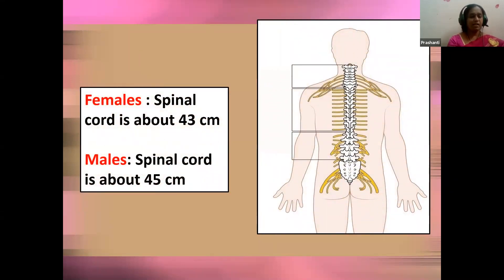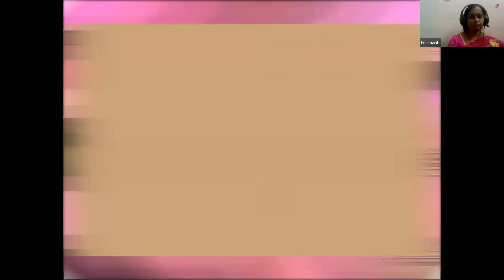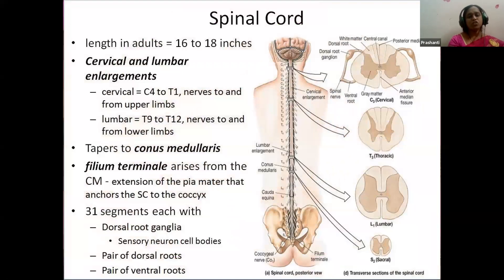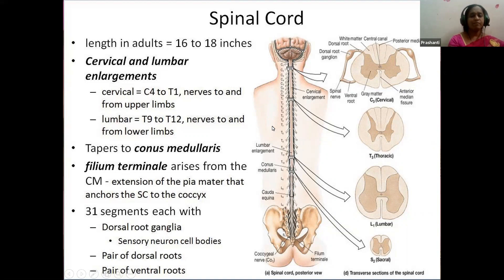The female spine is different from the male spine — not of equal size. The female spine is 43 centimeters and the male spine is about 45 centimeters, nearly 16 to 18 inches. At the neck region we call it the cervical region, the back region is thoracic, and the lower back is the lumbar region. We find enlargements at the cervical region and the lumbar region, and there are spinal nerves present.